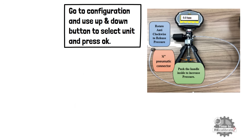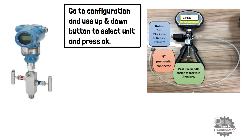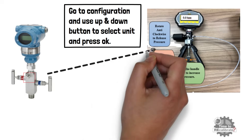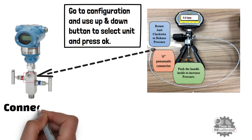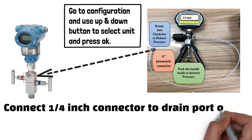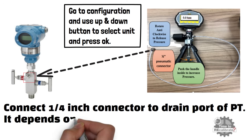For example, if you want to set the kPa unit, go to the configuration menu and use the down button until you see kPa. After this, press OK to confirm the selection. Now connect a 1/4-inch connector to the drain port of the pressure transmitter. It depends on the size of the drain port.